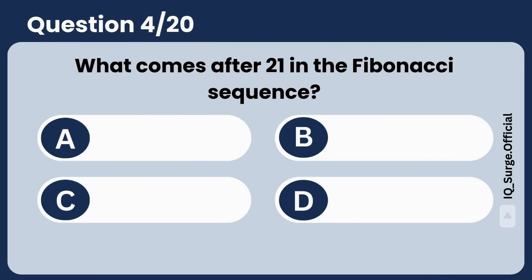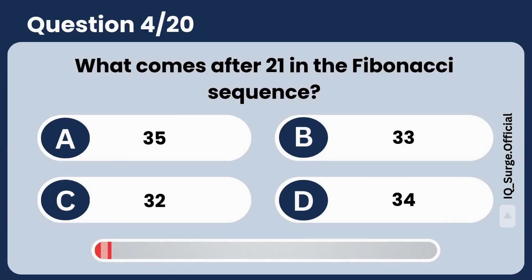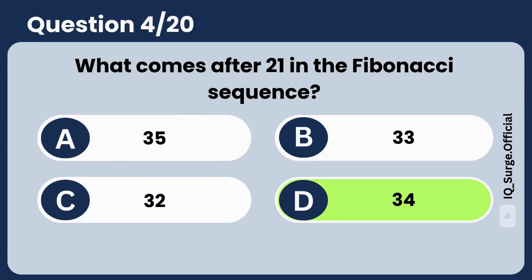What comes after 21 in the Fibonacci sequence? Answer: 34. You nailed it.